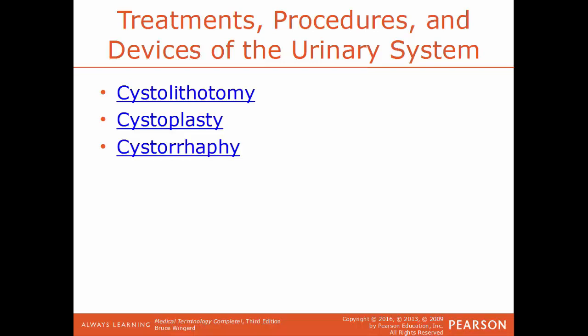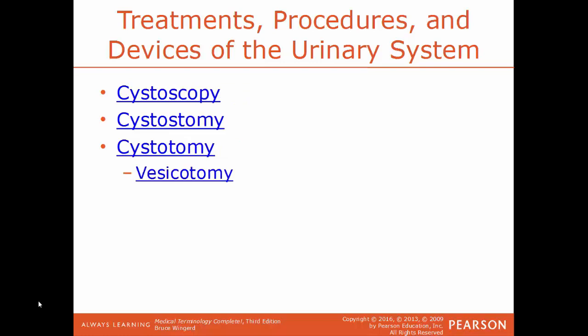Cystoplasty is the surgical repair of the urinary bladder. Cystorrhaphy is putting sutures within the urinary bladder. Cystoscopy is a visual examination of the bladder. Cystostomy is the surgical creation of a new opening into the urinary bladder. To do so, you need to cut into the bladder — that process is cystotomy, also known as vesicotomy.